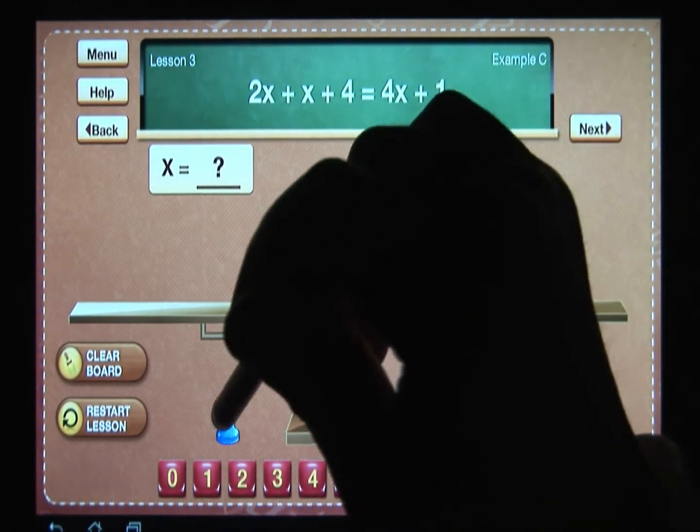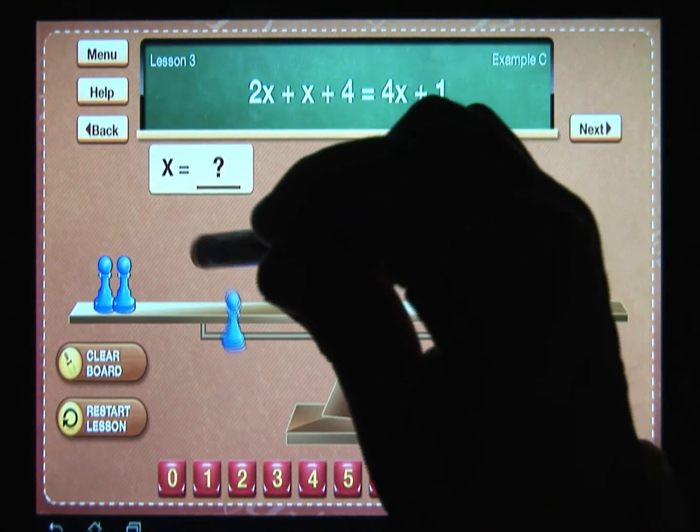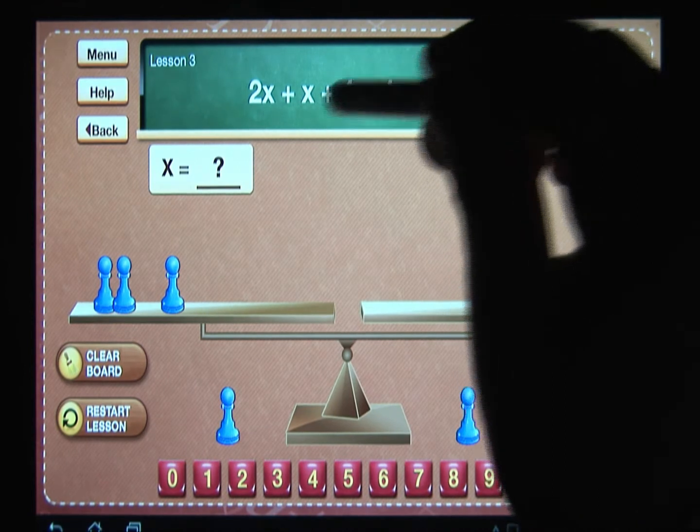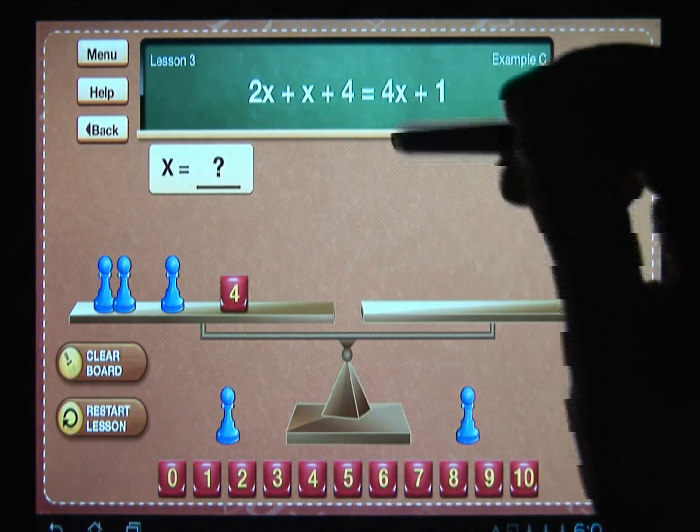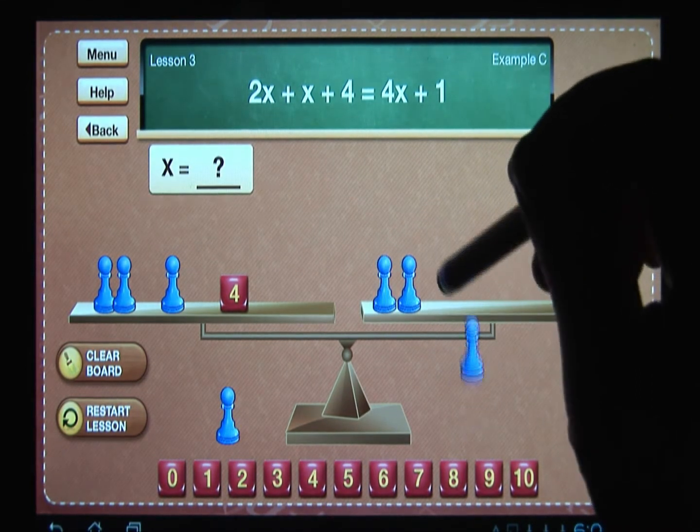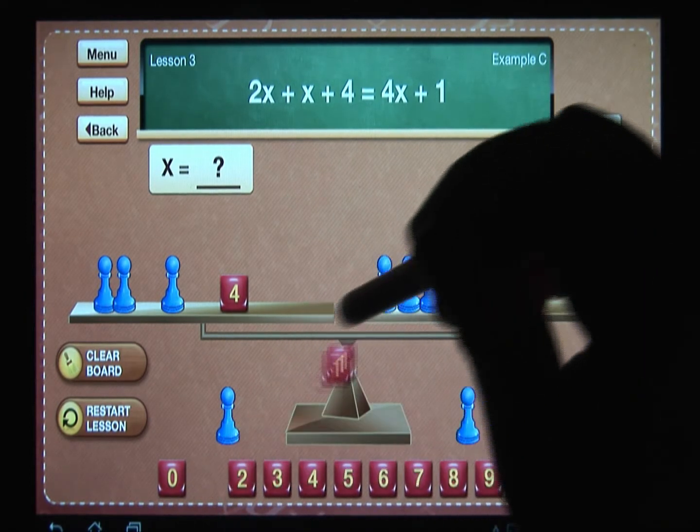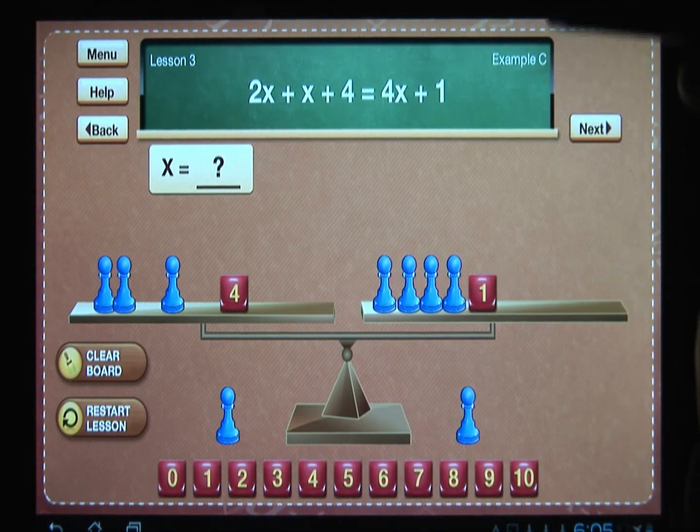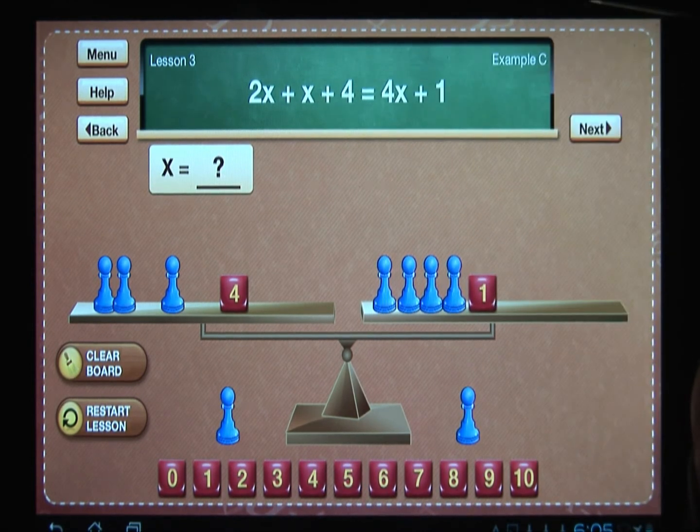Since it says 2x + x + 4 = 4x + 1, I'm going to place two blue pawns up here, then it says plus x so I'm going to add another pawn. It says plus four so I'm going to add a cube with the number four. On the right side it says four x's so I will have one, two, three, four pawns plus one, and a cube with the number one. Now we are told that both sides of this equation have the same value.